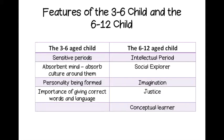The three-to-six stage child has sensitive periods and the absorbent mind, which includes absorbing the culture and cultures around them. Personality is being formed at this age — with that sponge-like brain and the way synapses and neurons are working, personality development is really key for the younger child. It's also really important to give correct words, language, and correct concepts about things.